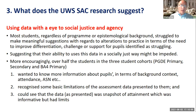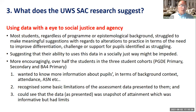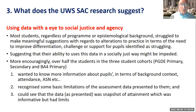This suggests that their ability to use data in a socially just way might be impeded — if they can't look at it holistically and then analyze it in a stratified way, we've got some problems. However, what was more encouraging was that over half the students in all three cohorts wanted more information — background context, attendance, rates of additional support needs in the class. They recognized the basic limitations of the assessment data presented to them and could see it was just a snapshot in terms of attainment, which was informative to a point but had its limits.